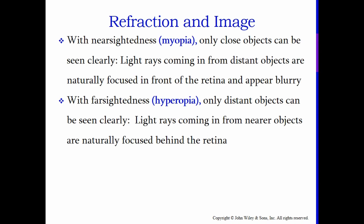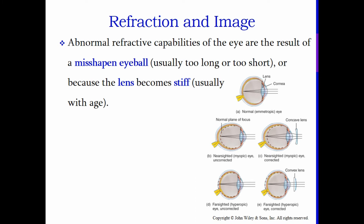With nearsightedness, also called myopia, only close objects can be seen clearly. Light rays coming in from distant objects are naturally focused in front of the retina and appear blurry. With farsightedness, also known as hyperopia, only distant objects can be clearly seen — light rays from near objects are naturally focused behind the retina. In normal vision, light going through the cornea and lens is focused perfectly on the retina, giving a clear image. If someone has an eyeball that is a little too long, they are nearsighted or myopic, and the lens focuses the light in front of the retina.